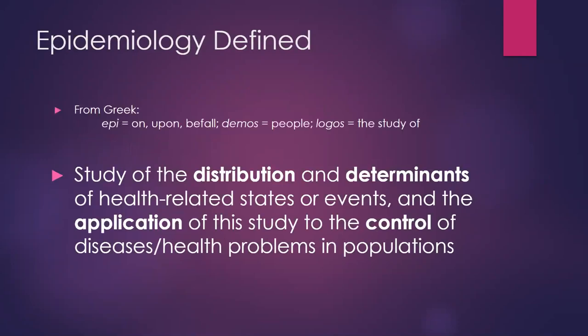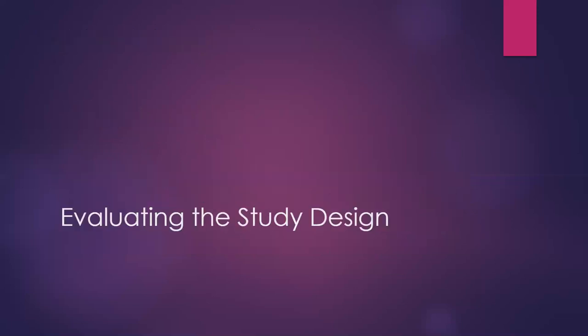From the very beginning of the semester we talked about what epidemiology is. It comes from the Greek, meaning a study of what is upon the people. We're looking at the distribution and determinants of health-related states and events, and ultimately we want to use that information to control poor health and improve health of populations. To do that we have to know: do we have good evidence?